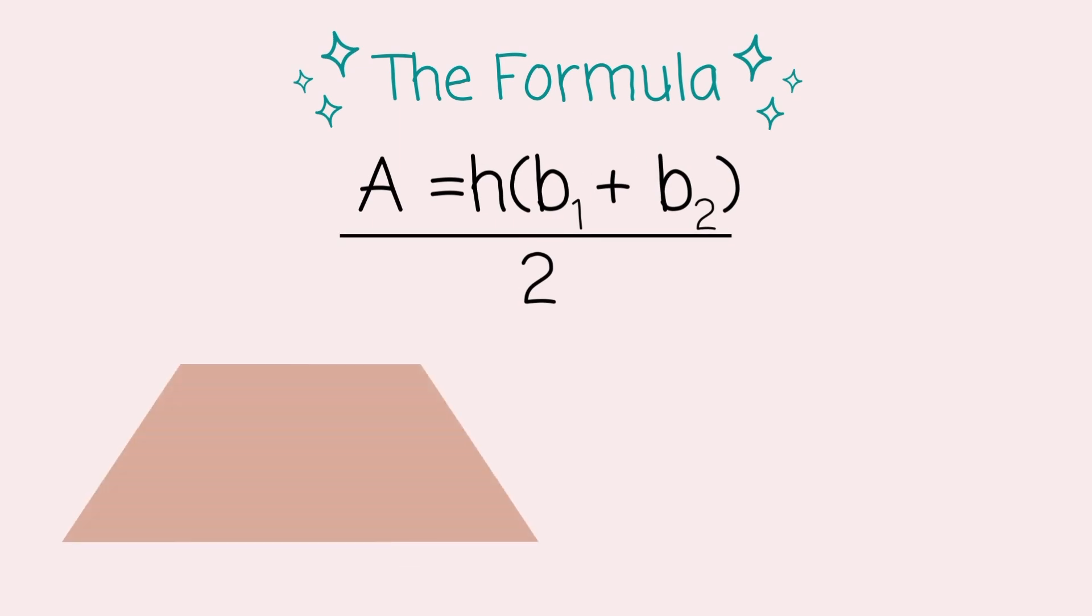Now for the formula, area is going to equal height times base 1 plus base 2 divided by 2. Now, base 1 and base 2 are going to be the top and bottom, or the parallel sides,